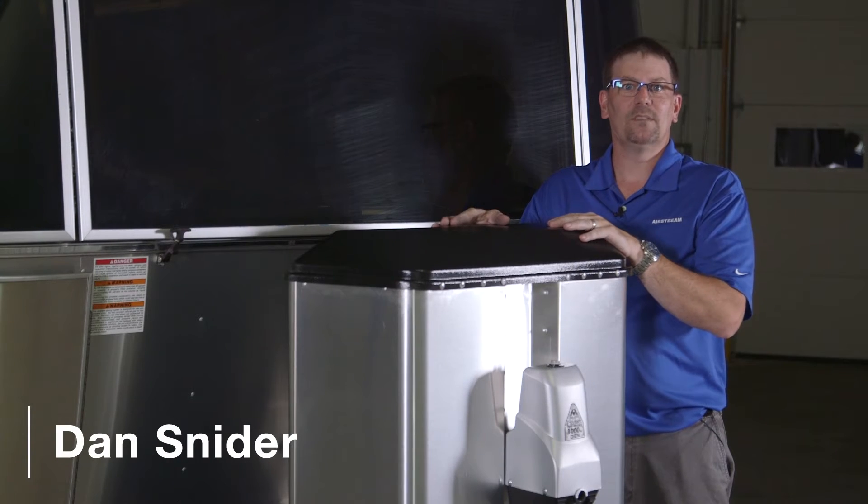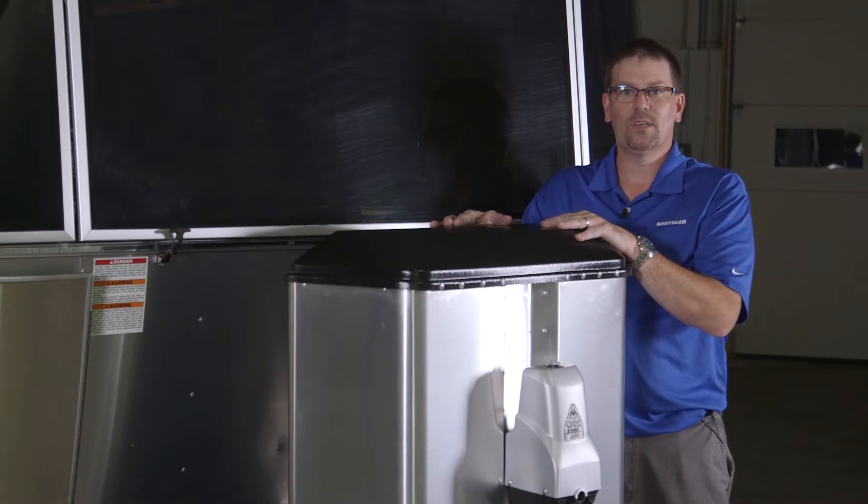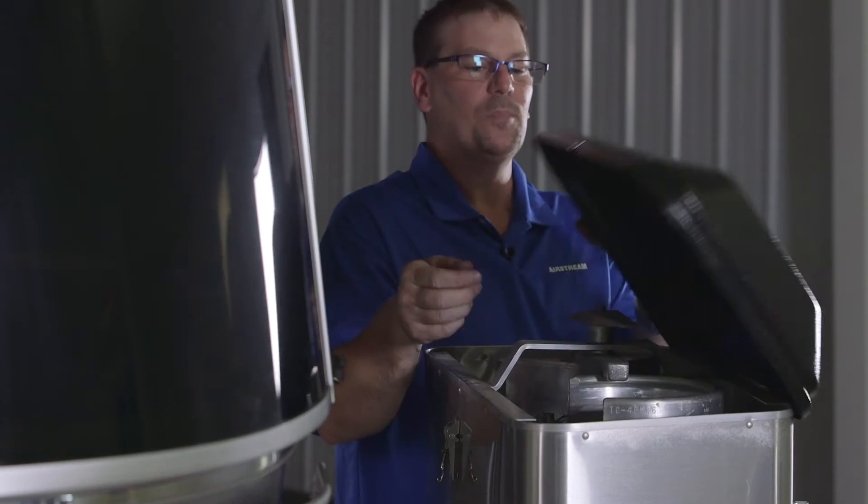When you have an LP tank run empty, this is where you want to go to change that tank out. This is your LP cover. What we want to do is disconnect the latch for the lid and flip the lid up.